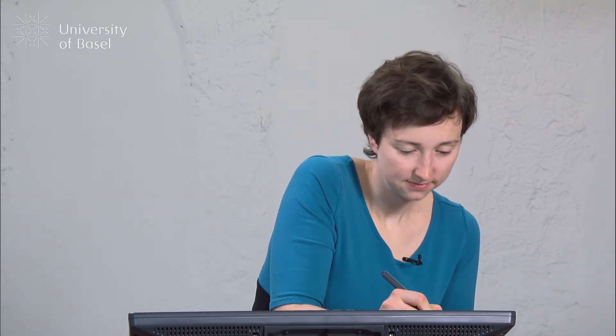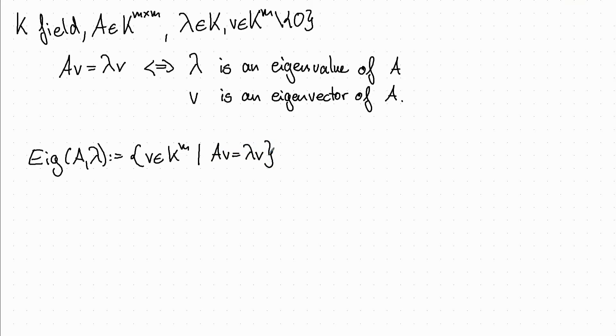Note that nonzero multiples of an eigenvector are again eigenvectors, and also the same holds for sums. So all eigenvectors for the same eigenvalue together form a subvector space. We call that the eigenspace, and we denote it by eig. These are all eigenvectors together with the zero vector. Note that although zero is in the eigenspace, it is not an eigenvector, since we excluded it in the beginning.